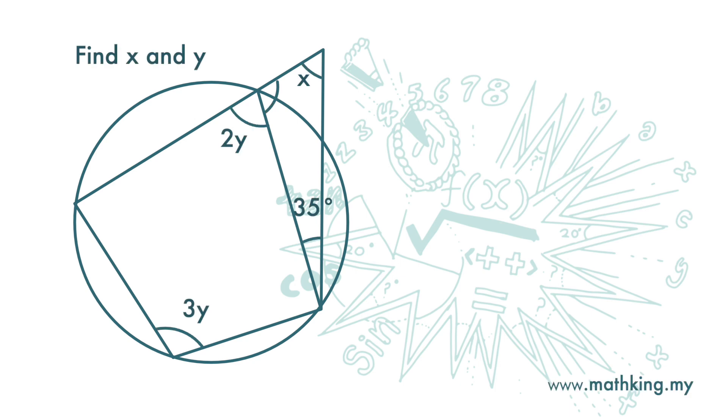One more example. Here we want to find x. We can see that 2y and 3y are interior opposite angles. We can find out y easily, so let's find out y first.